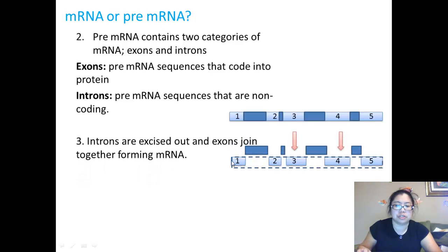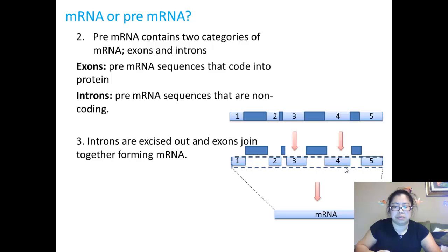So what happens is that introns are excised out. Here in the next step you can tell that the blue introns are cut out. Afterwards, the exons that are remaining will form mRNA pieces into one whole entire mRNA.